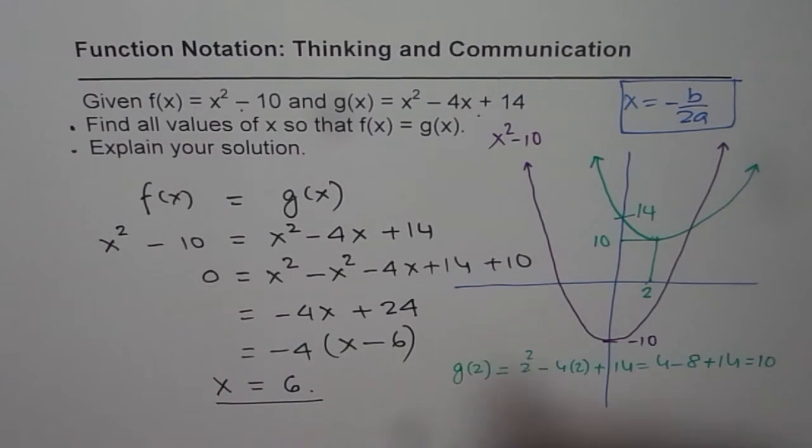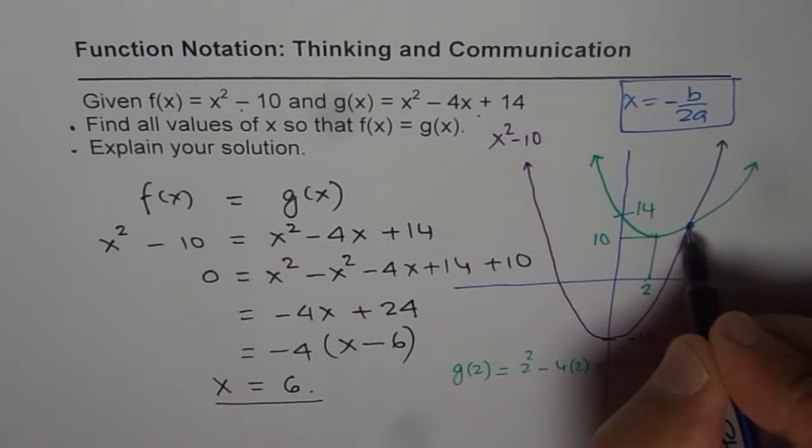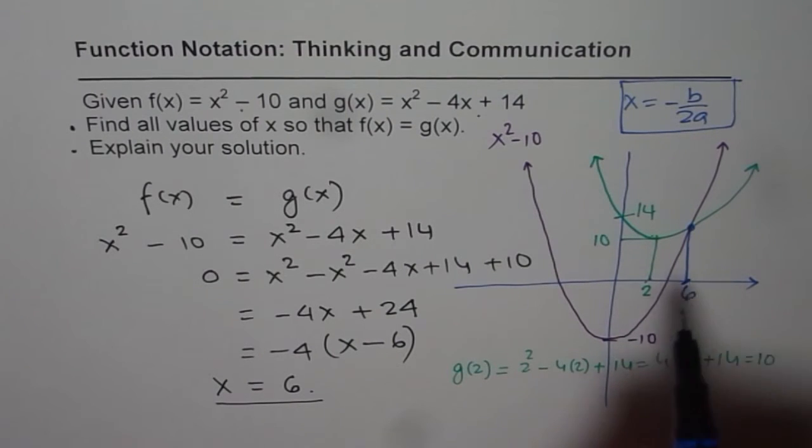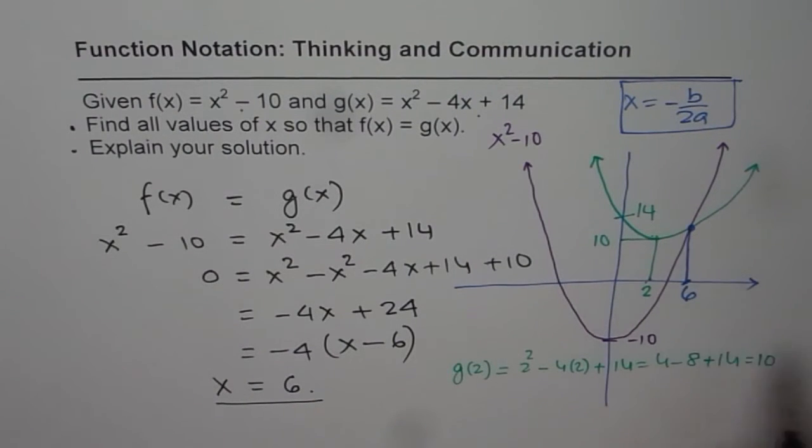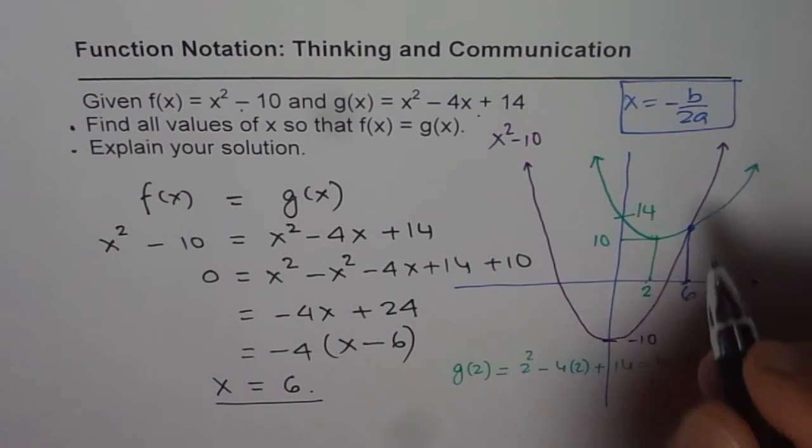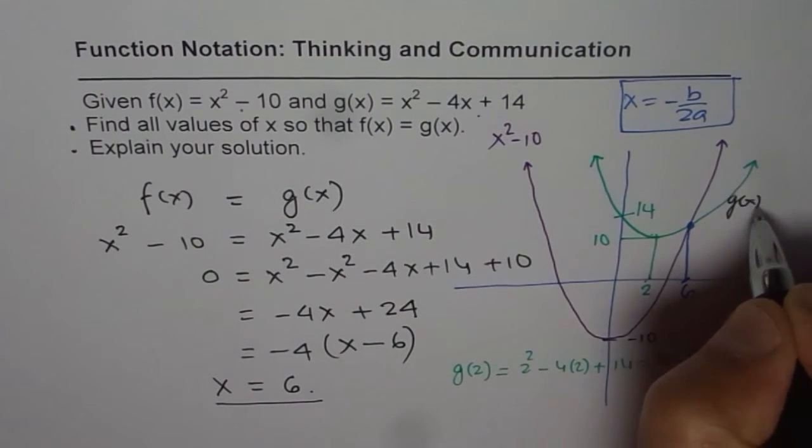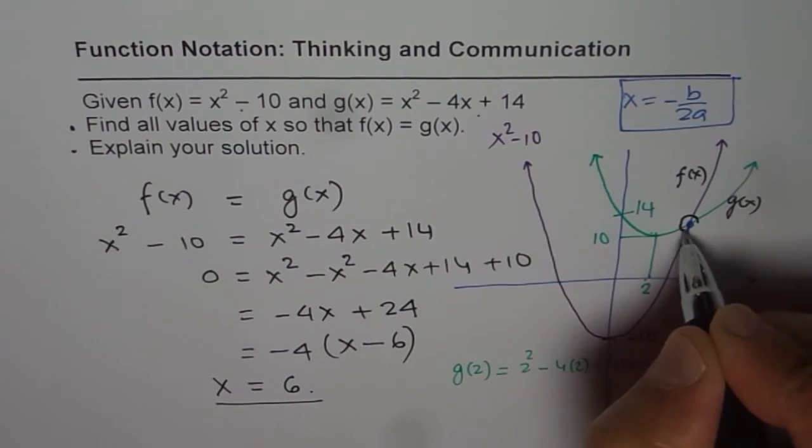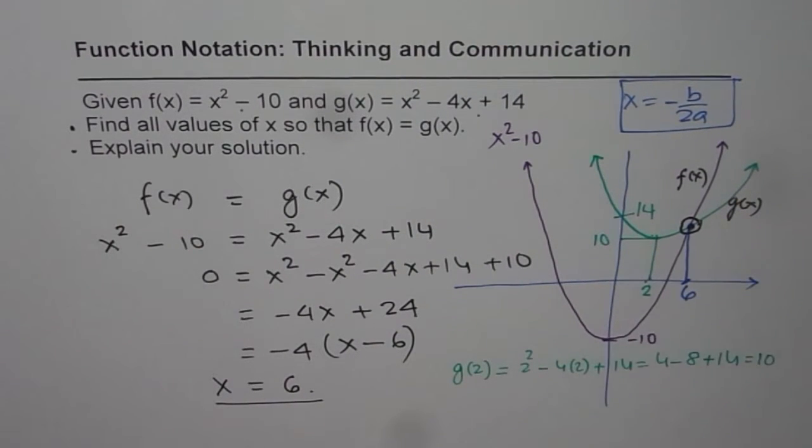Now when we say x equals 6, that means the point of intersection is at x equals 6. Do you see that part? This is the x value at which both the functions have the same value. So this one is our g of x and this one is f of x. Both these functions intersect at this point, which is at x equals 6. That is what it means.